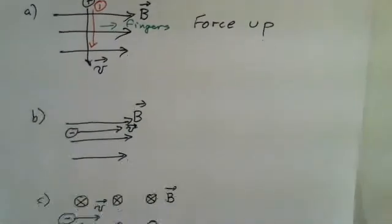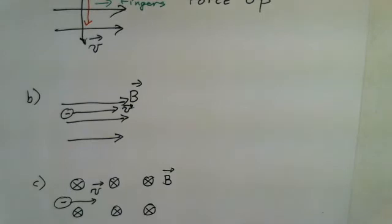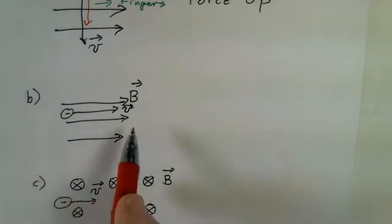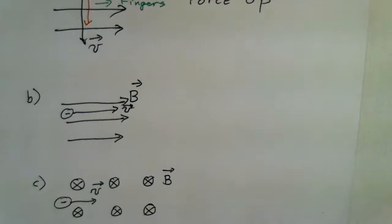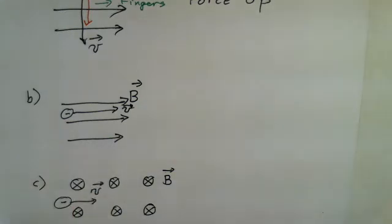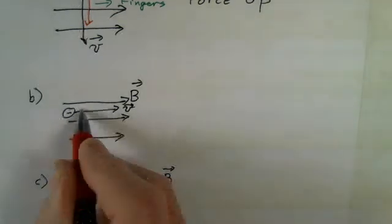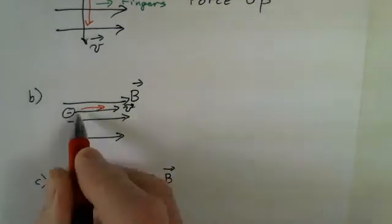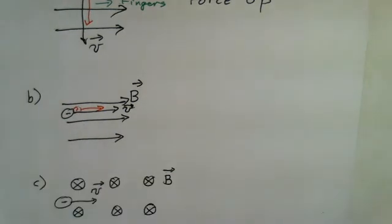Second case: we have the magnetic field off to the right and the velocity off to the right of a negative particle. In this situation, if I put my fingers in the direction of the velocity — that's step one — do I have to rotate my wrist so my fingers can point in the direction of the magnetic field? The answer is no.